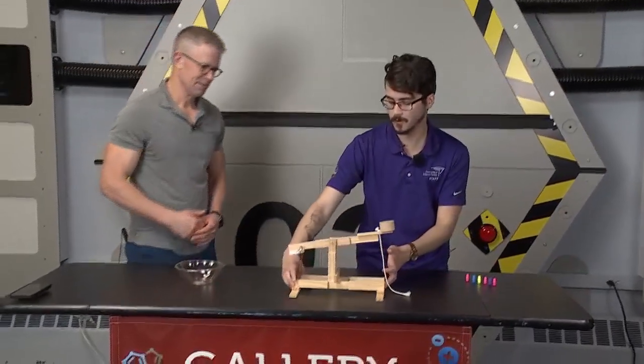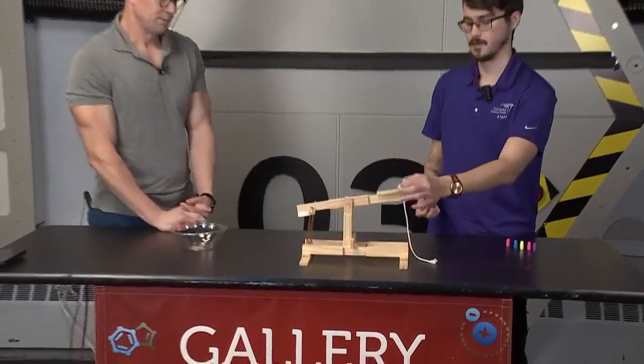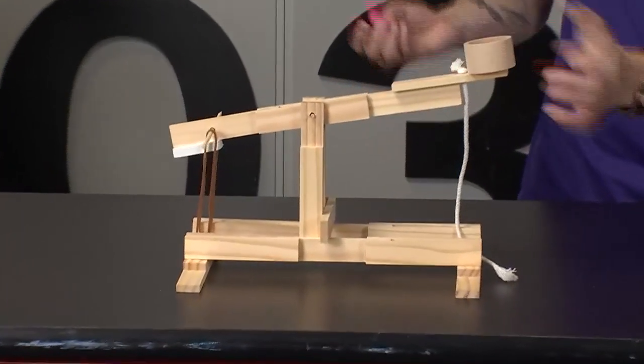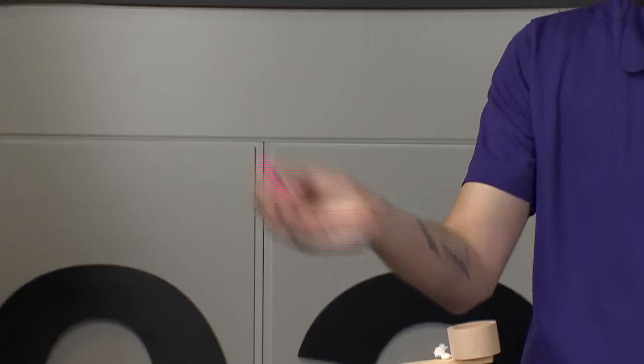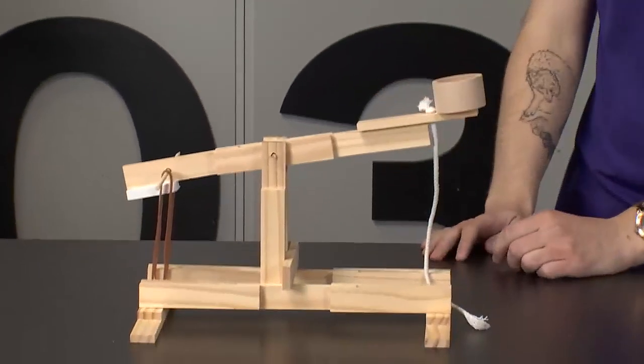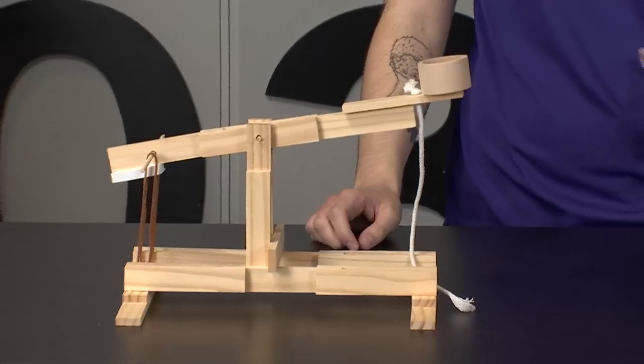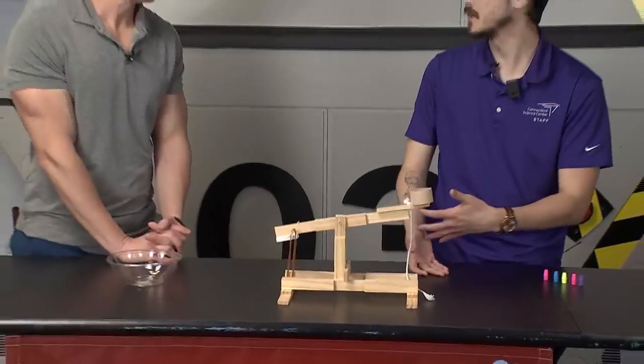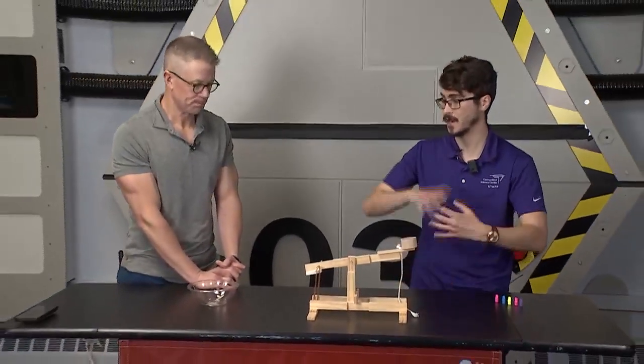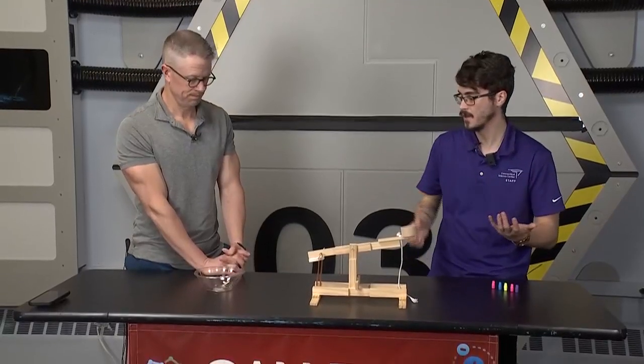We have our little cargo holder up here that we'll be launching out of. Today we're just going to use some eraser caps as our ammo. It's a relatively straightforward process. The most important thing we need is some way to create that potential and kinetic energy - potential is storing it up, kinetic is releasing it.